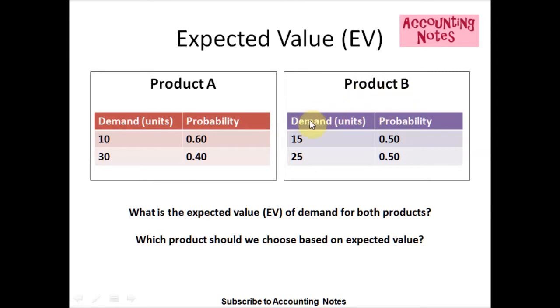For Product B, the demand for the first week is 15 units and the probability is 50%, which is 0.50. The demand for week 2 is 25 units with a probability of 0.50.